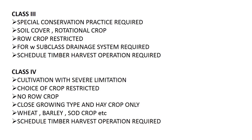In Class 4 land, cultivation is possible but with severe limitations and many restrictions. Choice of crops is restricted — no row crops are allowed. Only hay crops, sward crops, and close-growing type crops like wheat and barley can be grown. Here also, if Class 4 land is in any forest area, you should go for scheduled timber harvest operations.